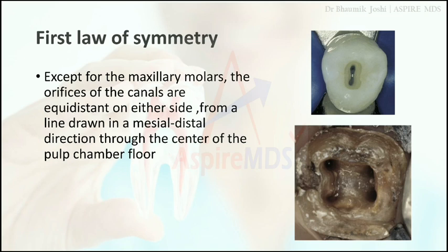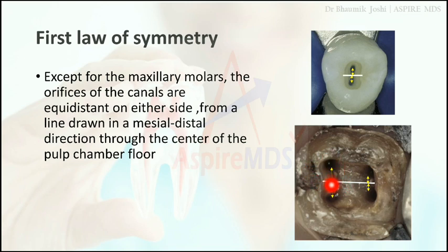Next is the law of symmetry — we have two laws. According to the first law of symmetry, if you draw a mesiodistal line through the pulp chamber, the root canal orifices are present equidistant from this line. For example, if you find the mesiobuccal canal at distance X from this imaginary line, the mesiolingual orifice will be found at the same distance X from that line.